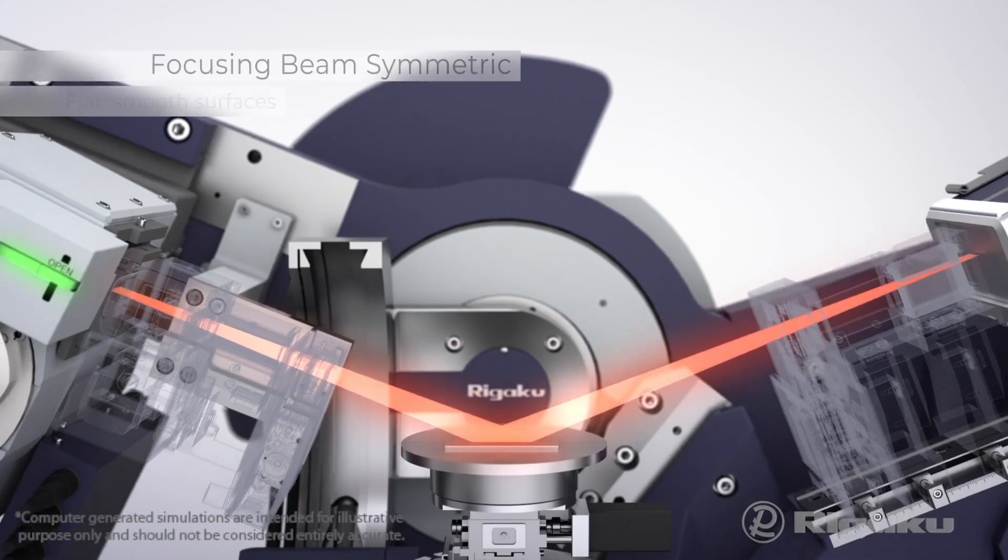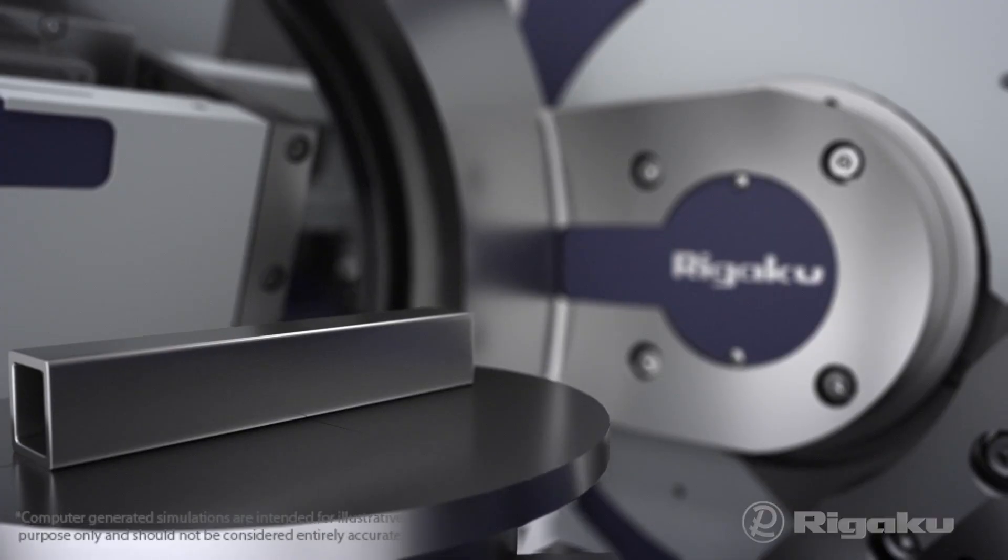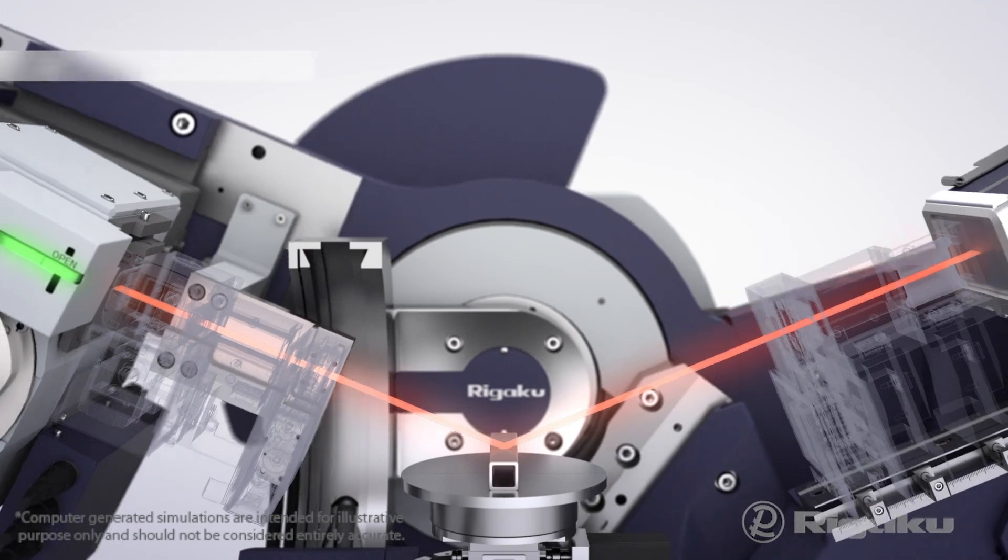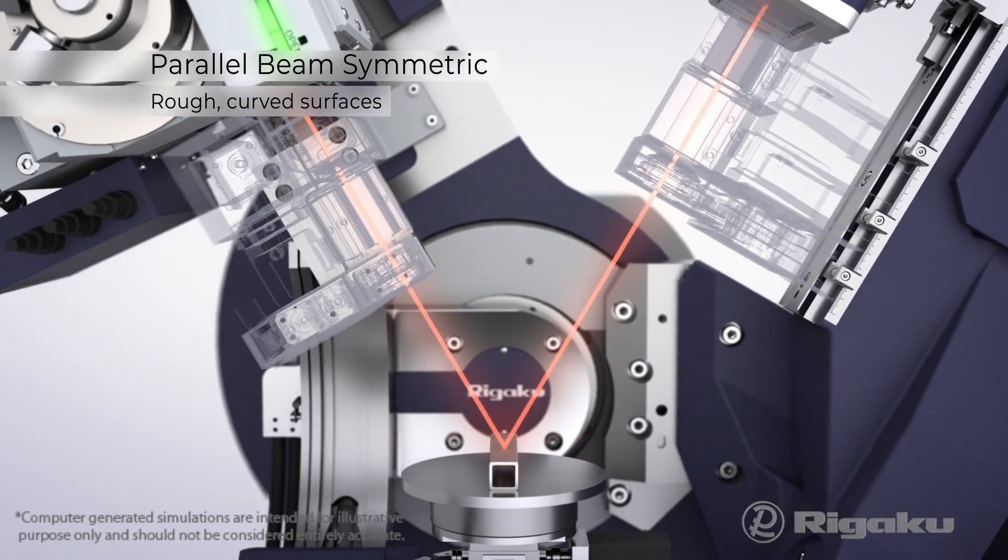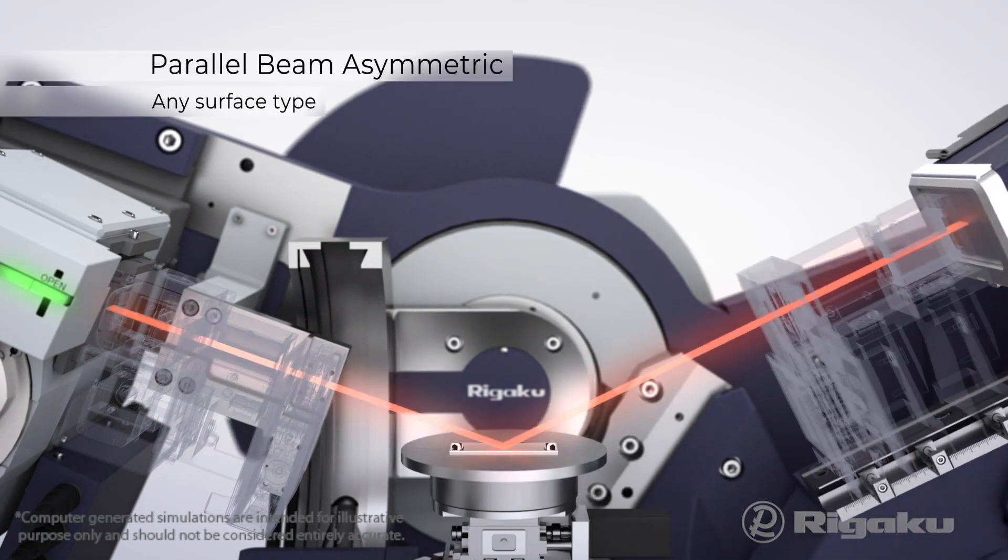For symmetric measurements of flat, smooth surfaces, Bragg-Brentano focusing geometry is best. Symmetric measurements of rough or curved surfaces require parallel beam geometry, as well as asymmetric measurements of any sample type.